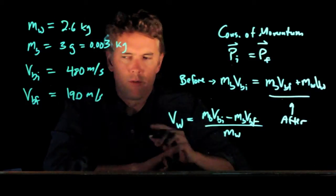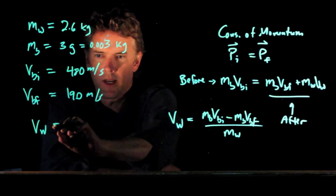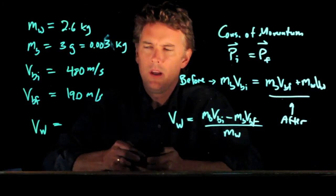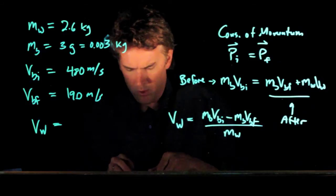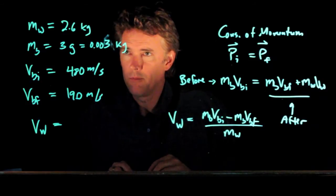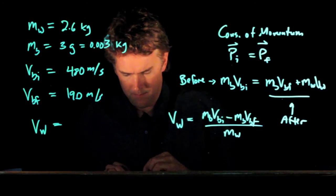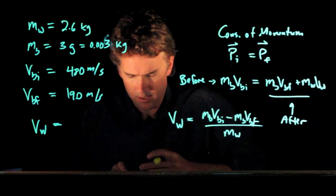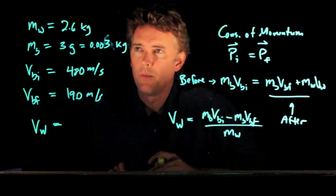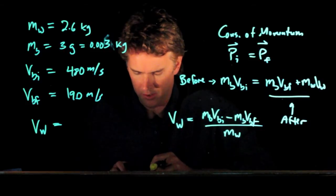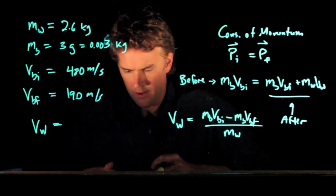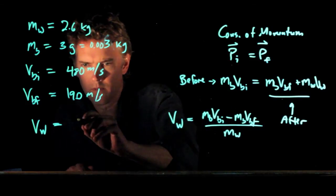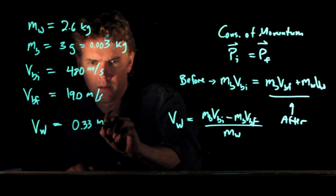So we can plug that in for VW. And let's see what we calculate. So we've got the mass of the bullet times the difference in the bullet speeds. So that's 480 minus 190 times 0.003. And in the numerator we get 0.87. And we've got to divide by 2.6 kilograms. And if you do that you should get 0.33 meters per second.